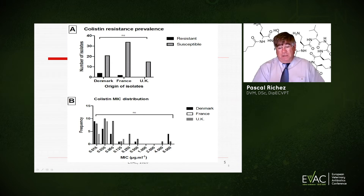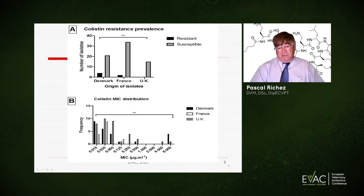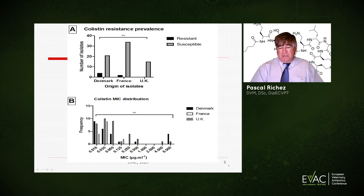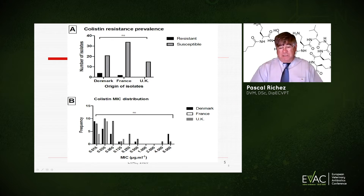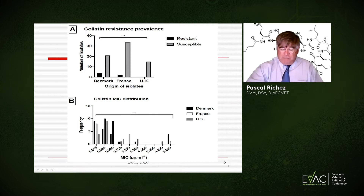Everything on the left of 2 micrograms is classified as susceptible, and everything on the right of 2 micrograms — that means 4 and 8 — is classified as resistant. But we will see in the next presentation that it doesn't mean you cannot kill a bacteria that has an MIC of 4 or 8 micrograms per ml. From a clinical point of view, using colistin at the right dose and the right dose regime — that means according to scientific rules — you will be able to treat an animal with a so-called resistant strain based on laboratory results. That's an important point.